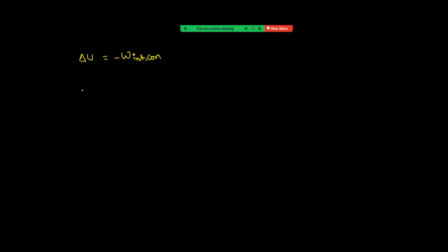Now let us take two point masses, M1 and M2. Let M1 be at rest, and M2 is moving towards M1 because of gravitational force. We are taking M1 and M2 as the system. Therefore, the gravitational force on M2 becomes an internal force, which is a conservative force.